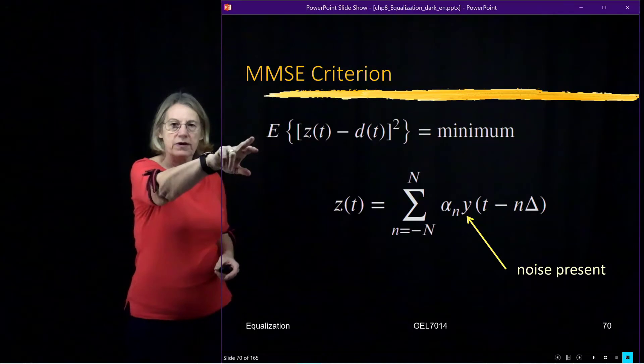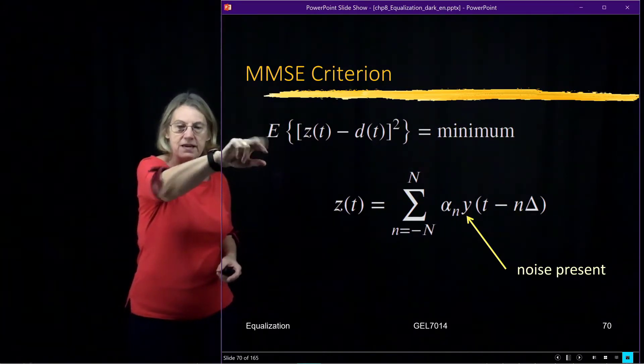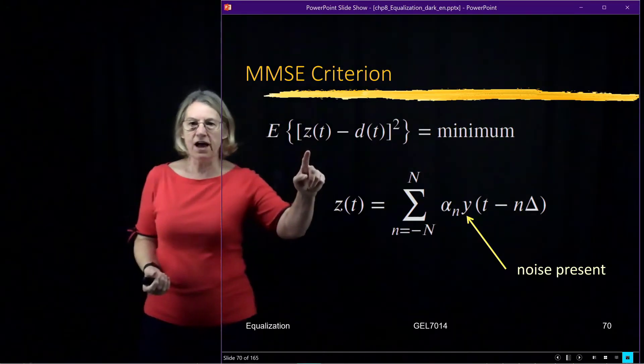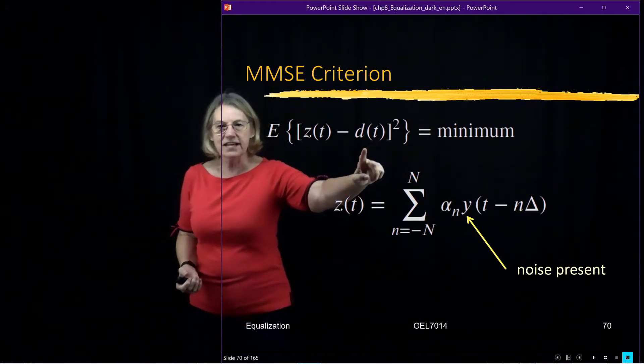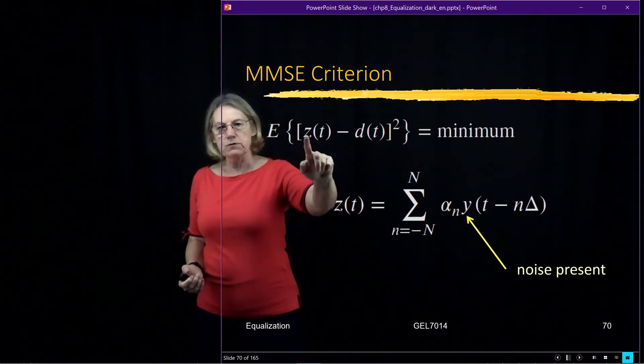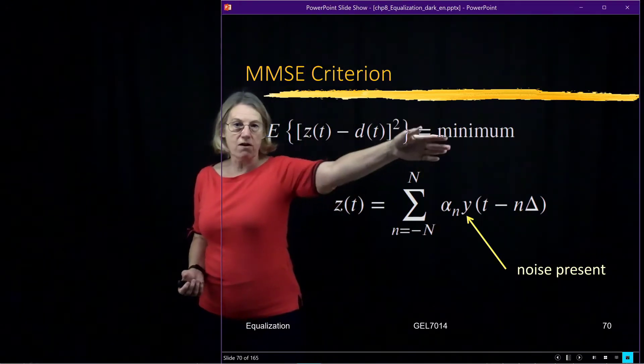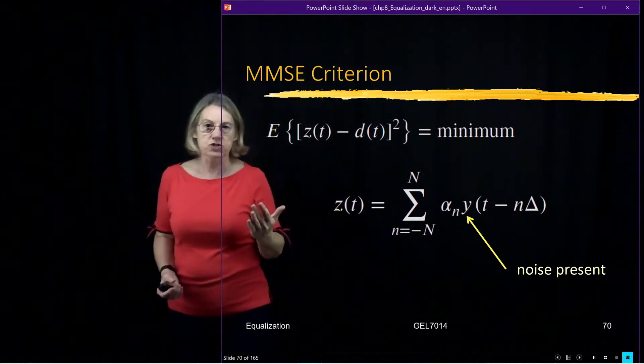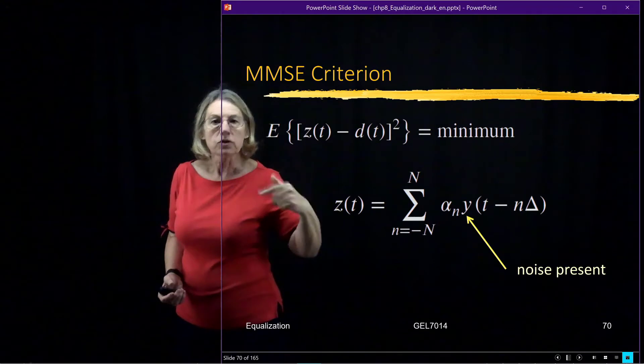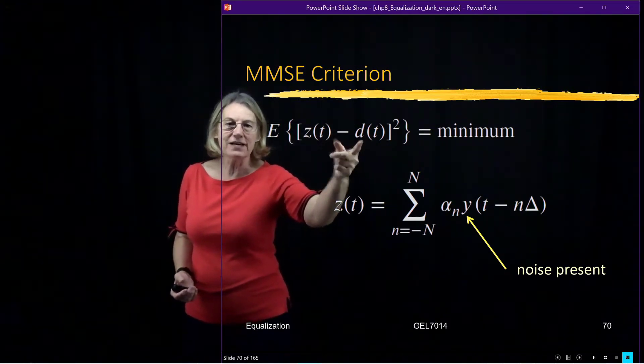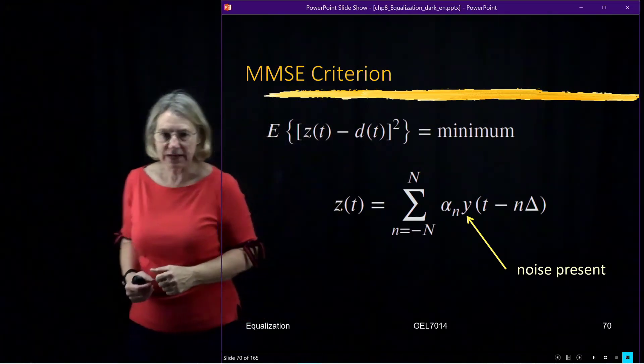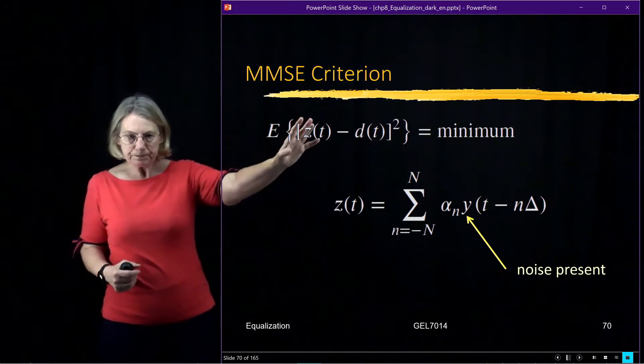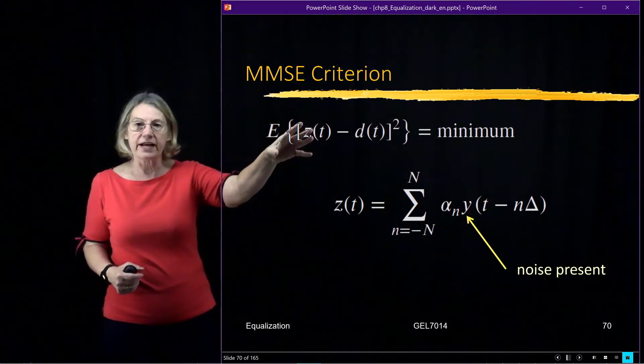So here is the error criterion that we use with the MMSE. You can see it's the output of the filter minus the data that was transmitted. So if it was perfect, this would be D, and the error would be zero. But it's not, because there's noise and there's residual distortion, and those two things will contribute to make it not be exactly equal to the data that we transmitted. So this is what we're trying to minimize.